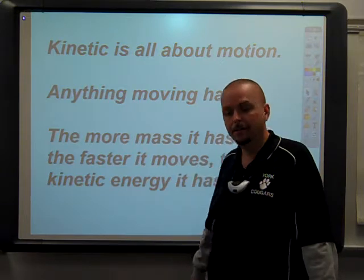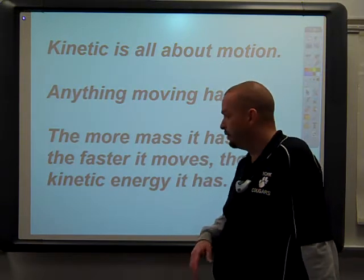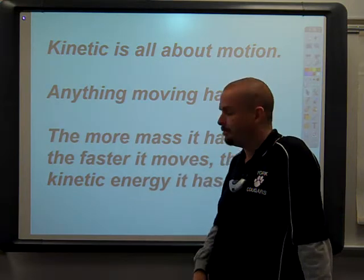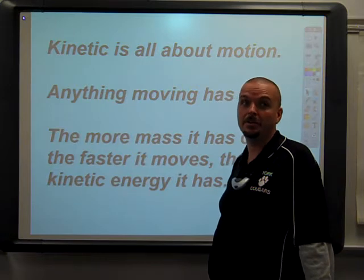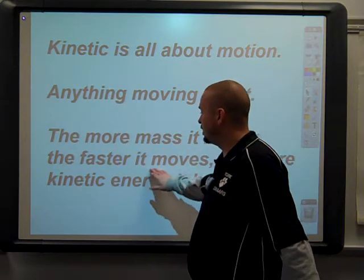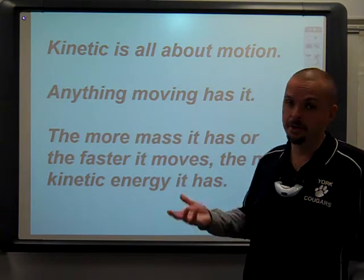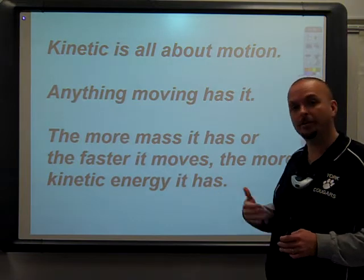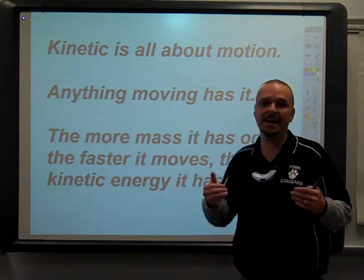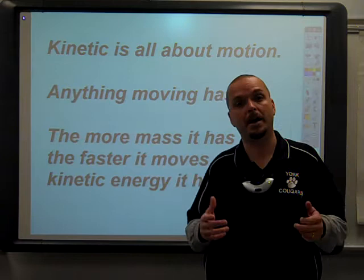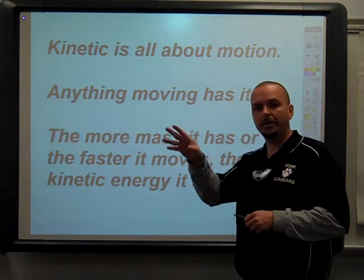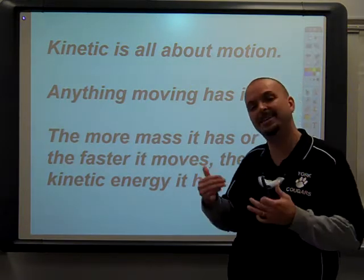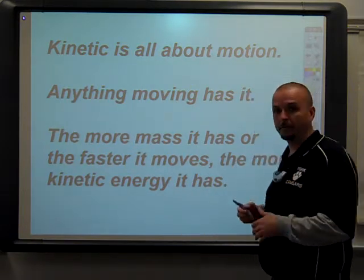If somebody lobs a baseball at you underhanded, you can catch it in your bare hand — it doesn't have much velocity, so it doesn't have much kinetic energy. But if that person throws that baseball at you as hard as they can, that increase in velocity gives it more kinetic energy and will cause a bigger change to your hand. Objects can have both kinetic and potential energy at the same time — moving and out of their resting position simultaneously. Throwing a ball through the air: because it's off the ground it has potential energy, and because it's moving it has kinetic energy.